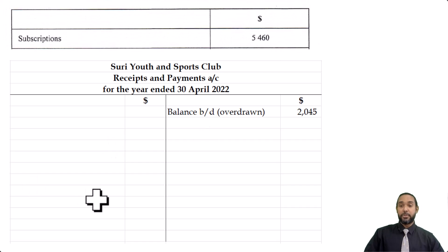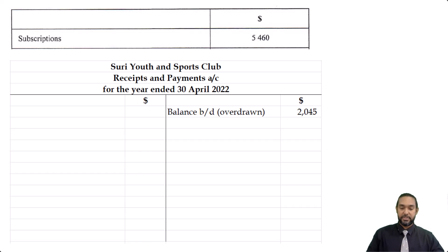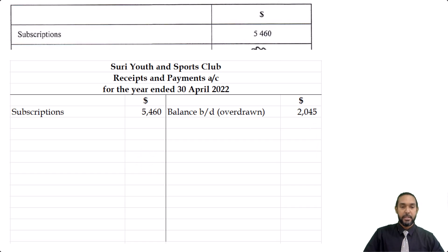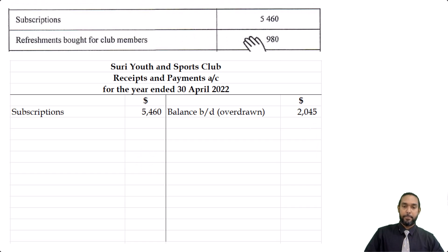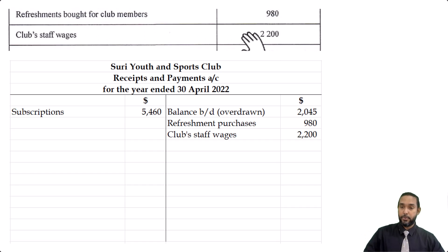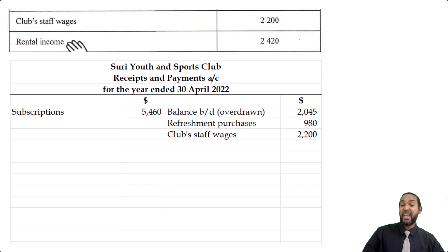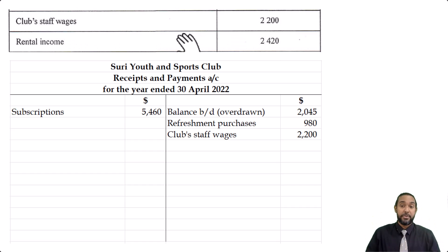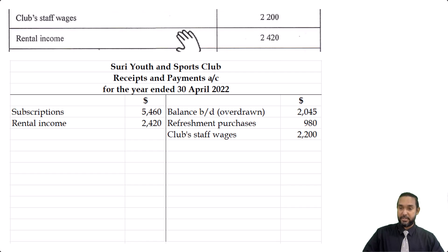First item: subscriptions. Subscriptions are basically how these sports clubs make their money — that's their major revenue source. So that's a receipt, which will go on the debit side. Then we have refreshments bought for club members, which is a payment — payments go on the credit side, 980. Club staff wages 2,200 — again, another payment on the credit side. Rental income 2,420 — income is a receipt, so that's going to go on the debit side.